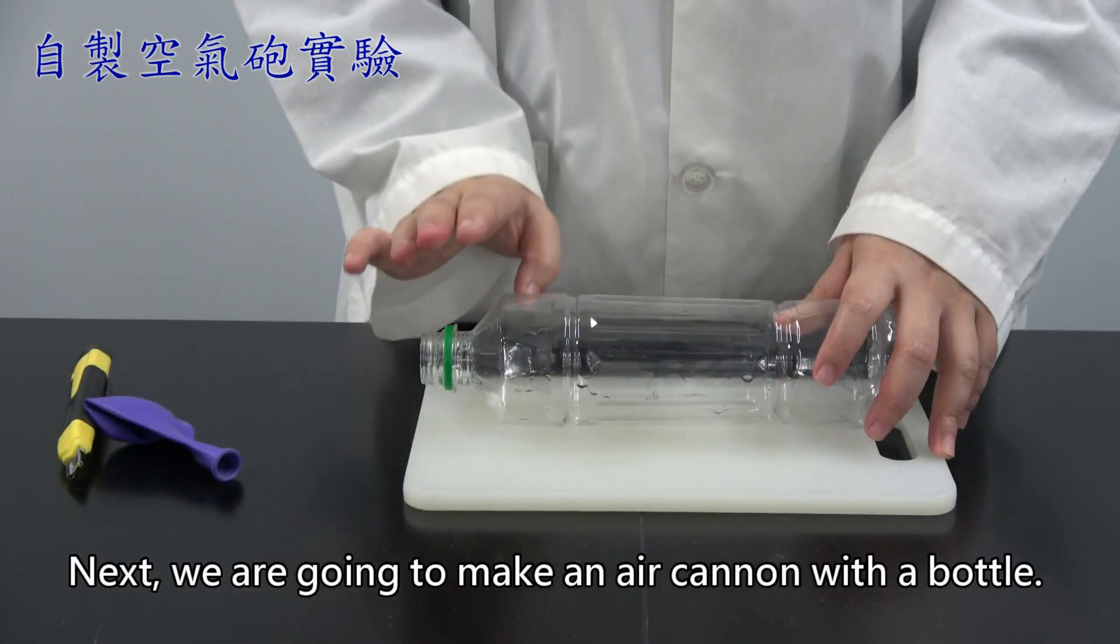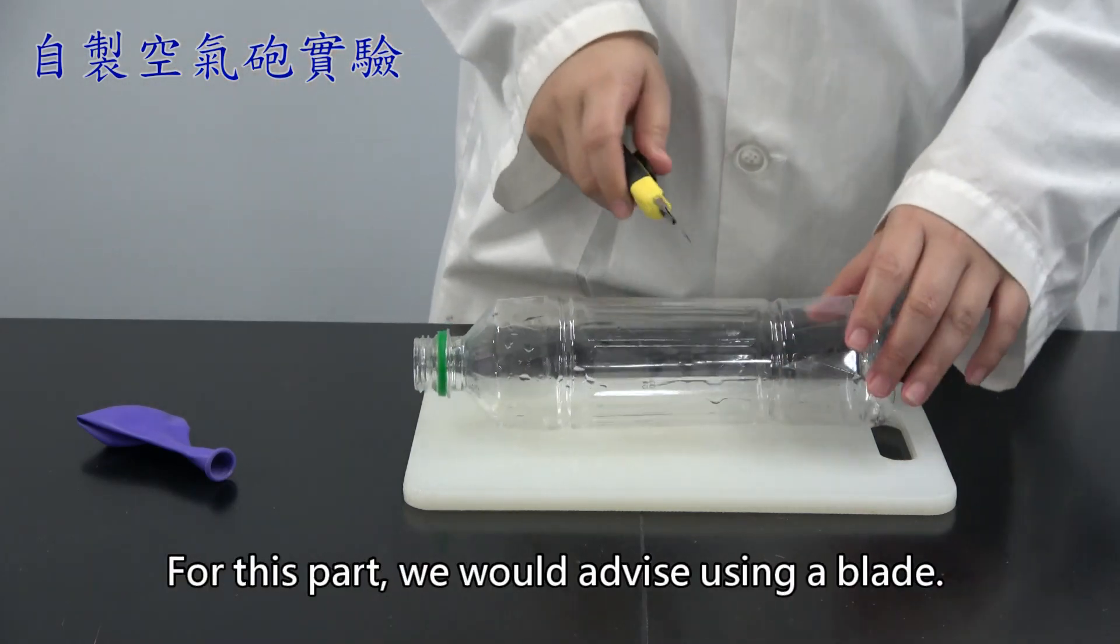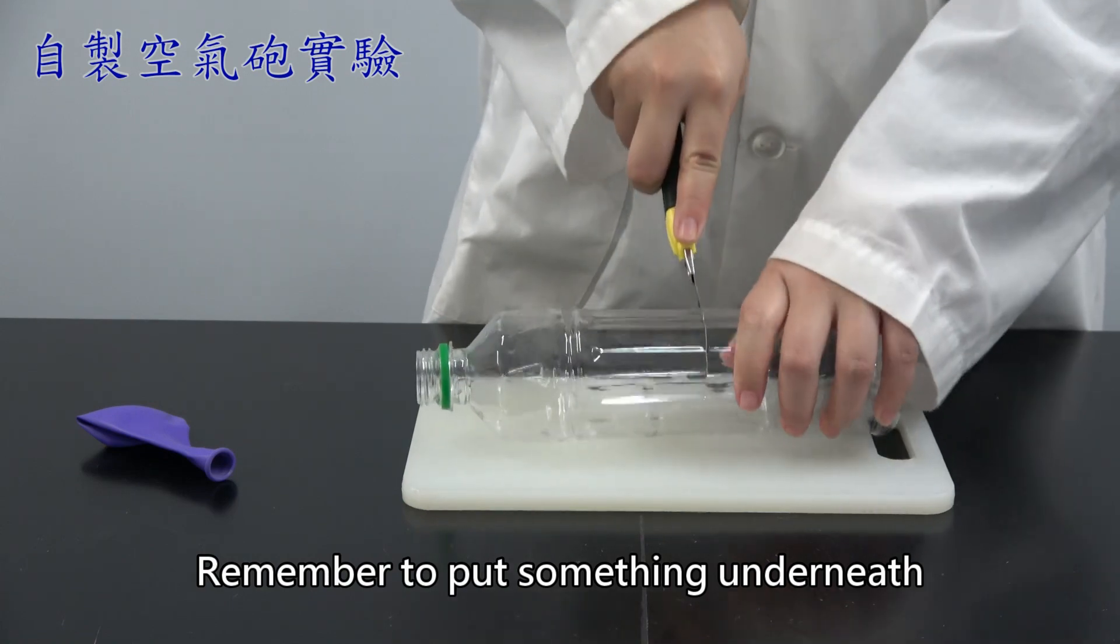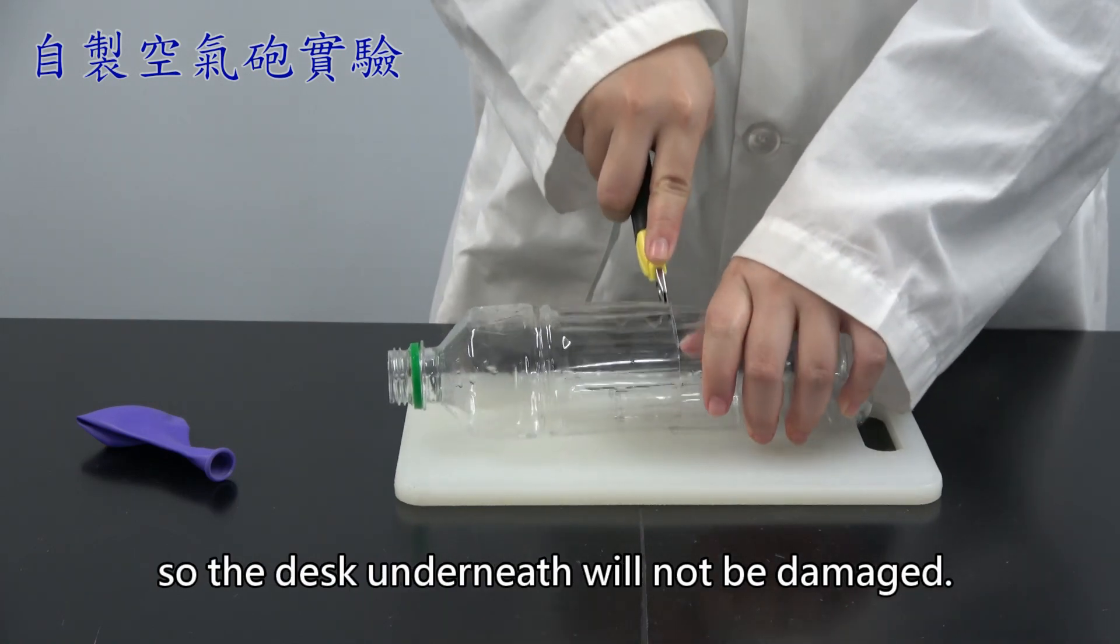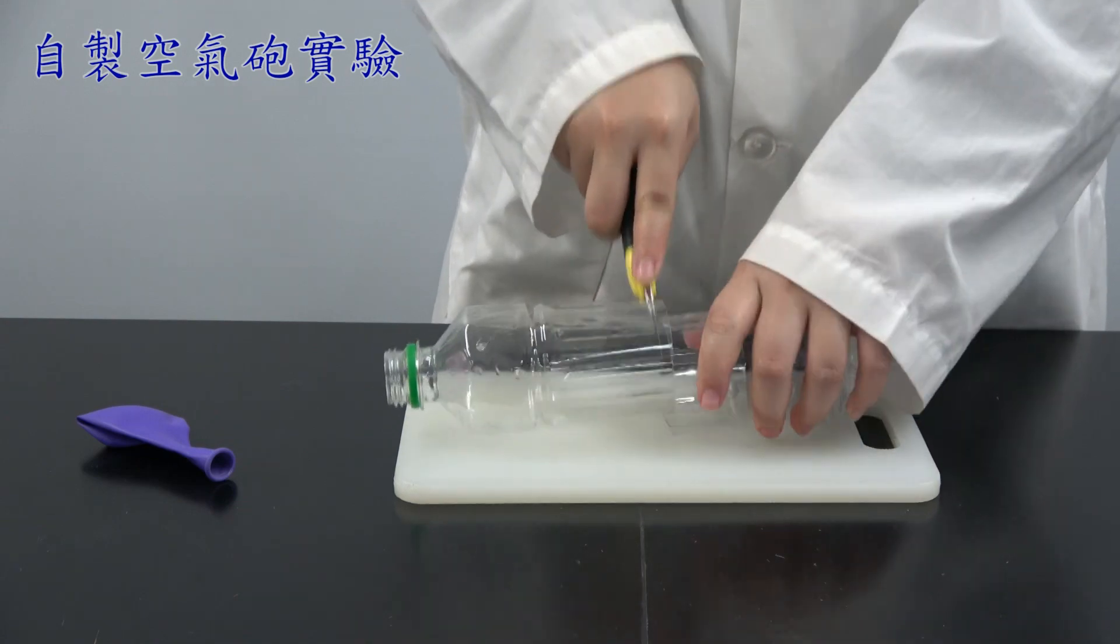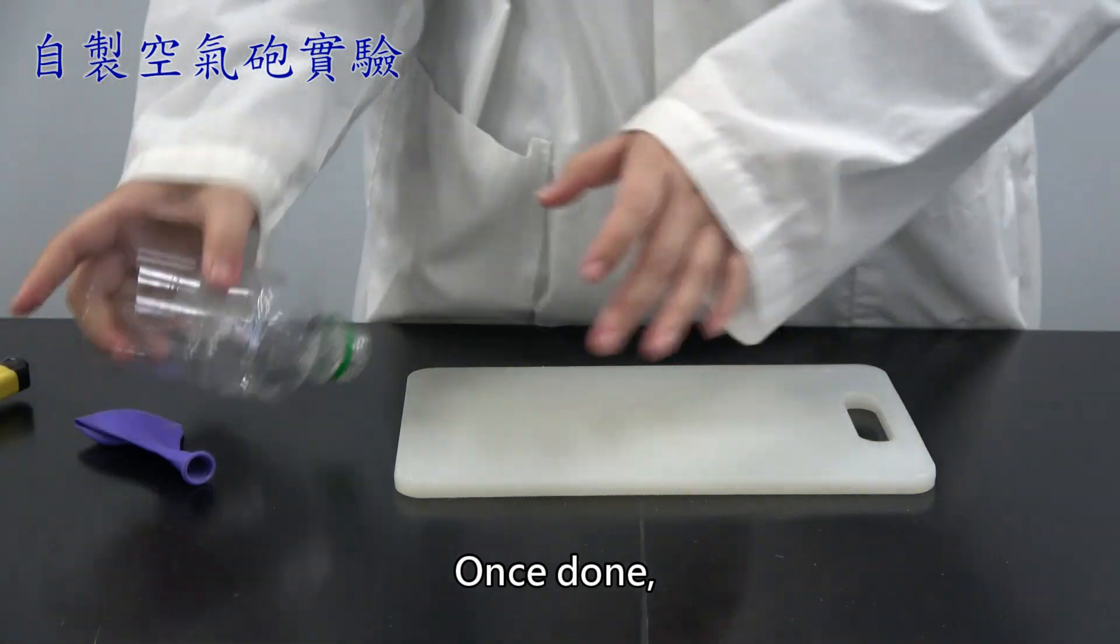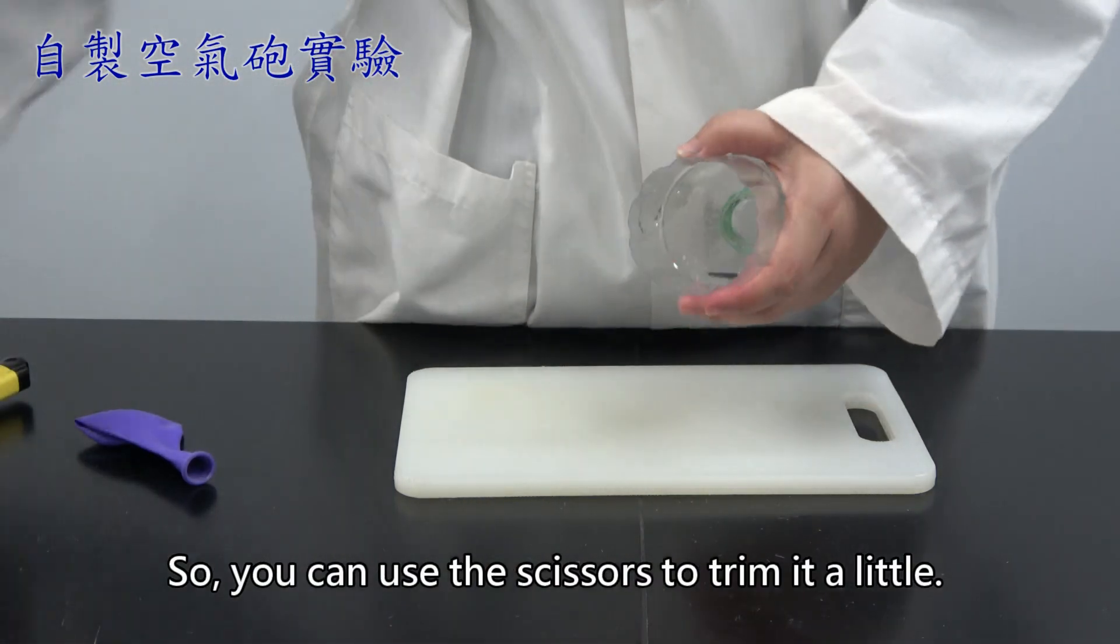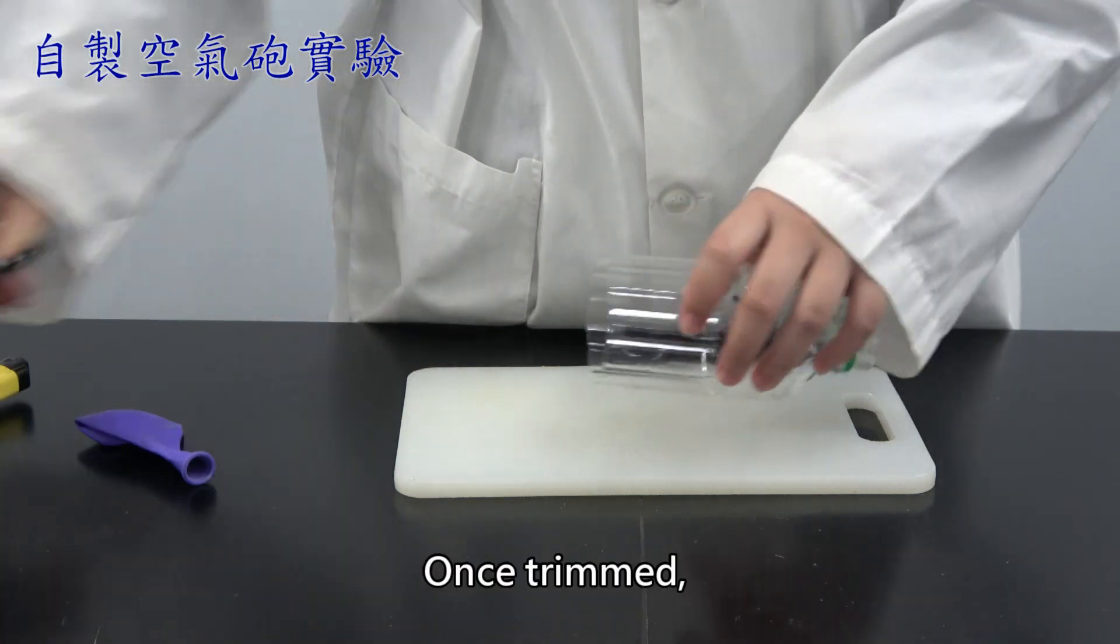Next, we are going to make an air cannon with a bottle. For this part, we would advise using a blade. Remember to put something underneath so the desk underneath will not be damaged. Once done, the opening here may not be even. So you can use the scissors to trim it a little.